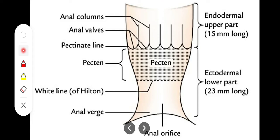The anal columns are called the anal columns of Morgagni, and their lower portions are joined by a line called the dentate line or pectinate line. This marks the middle of the internal anal sphincter and also serves as the dividing line between the upper one-third and middle one-third portions. The pectinate line is also the boundary between endoderm and ectoderm, and is present at the level of the middle of the internal anal sphincter.